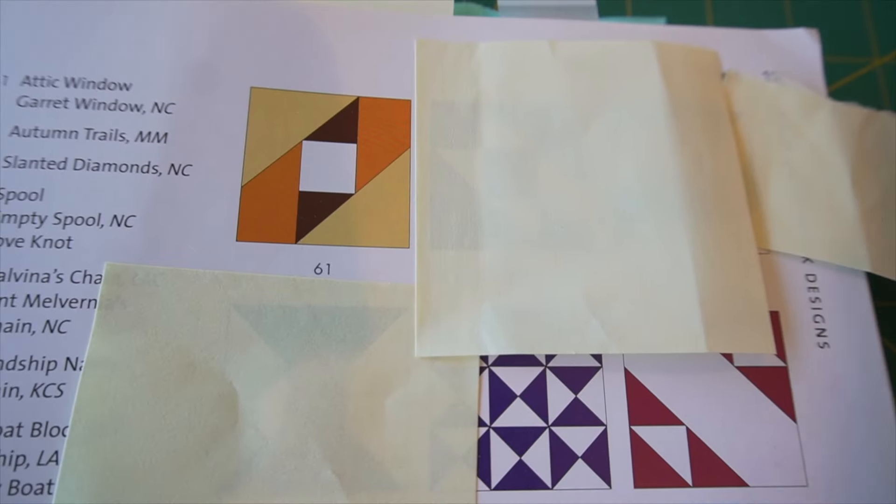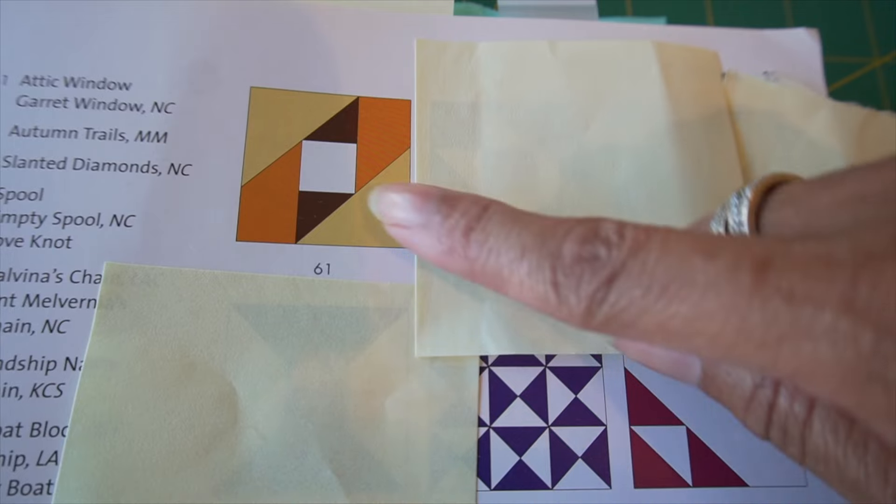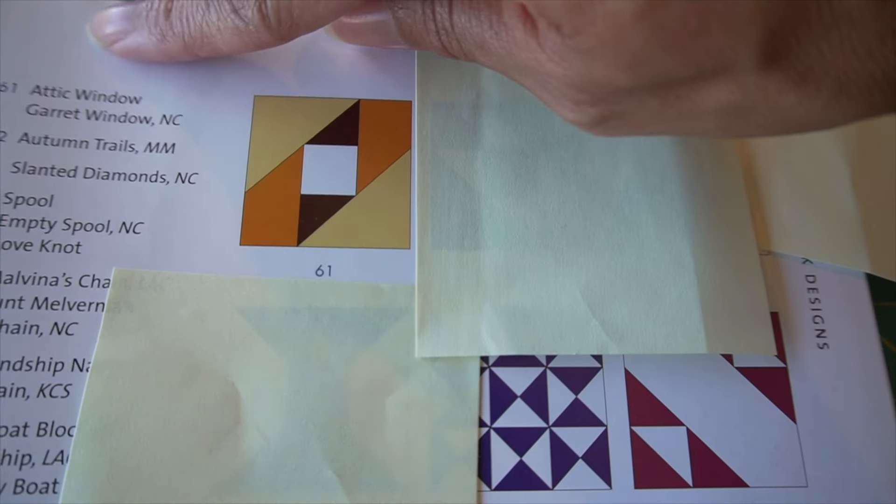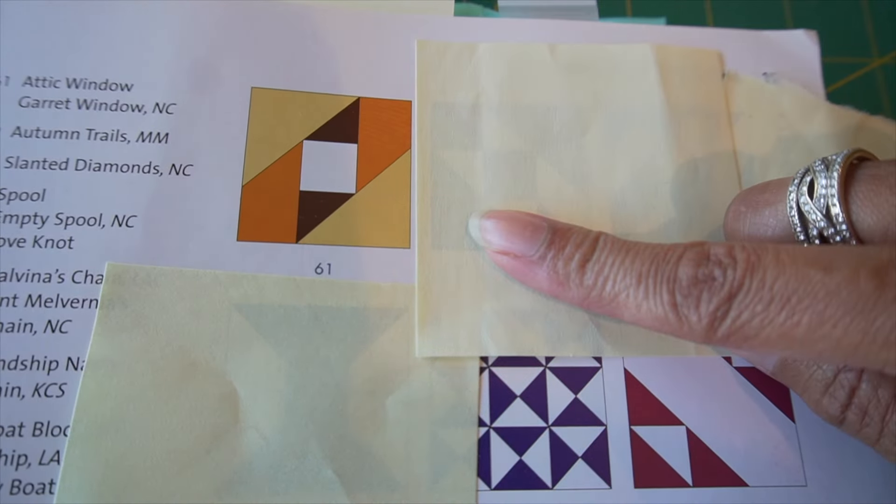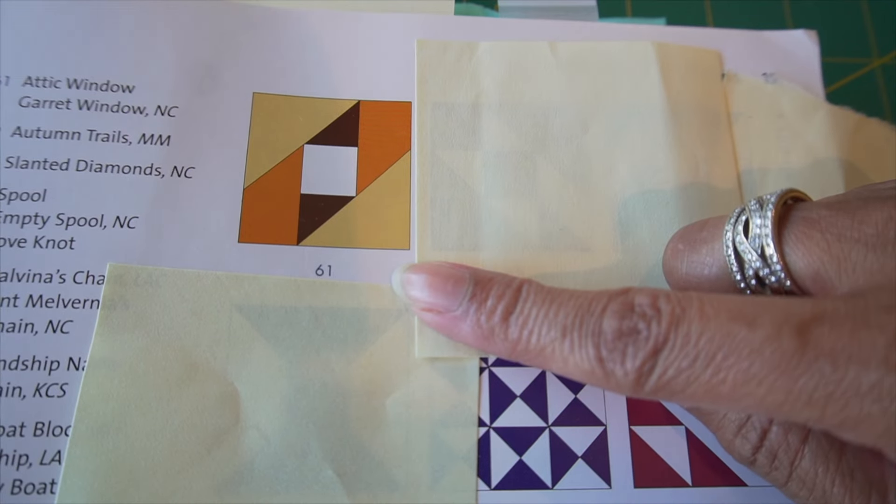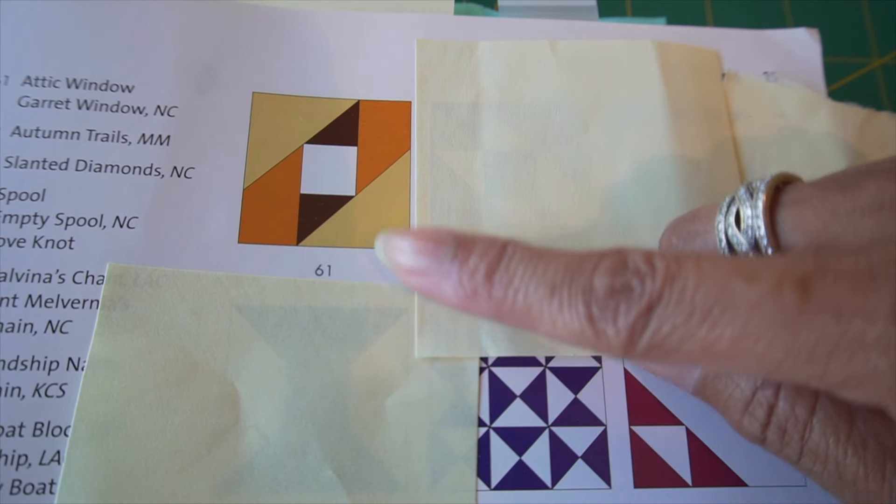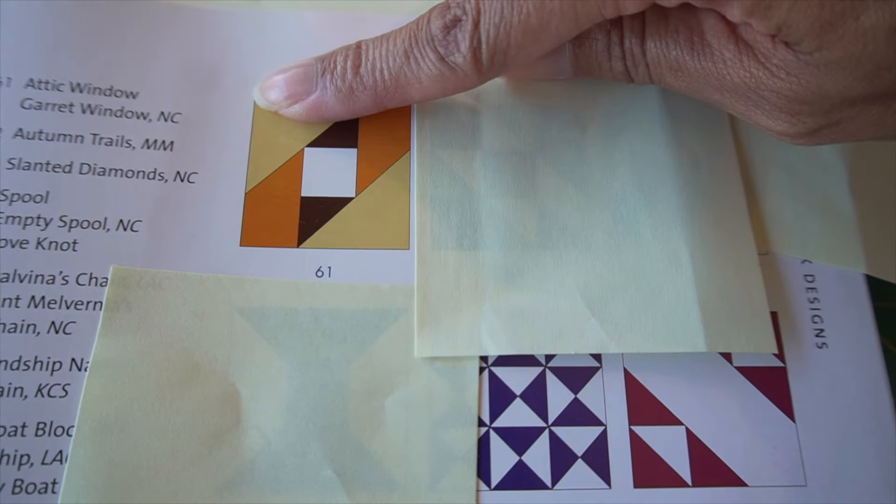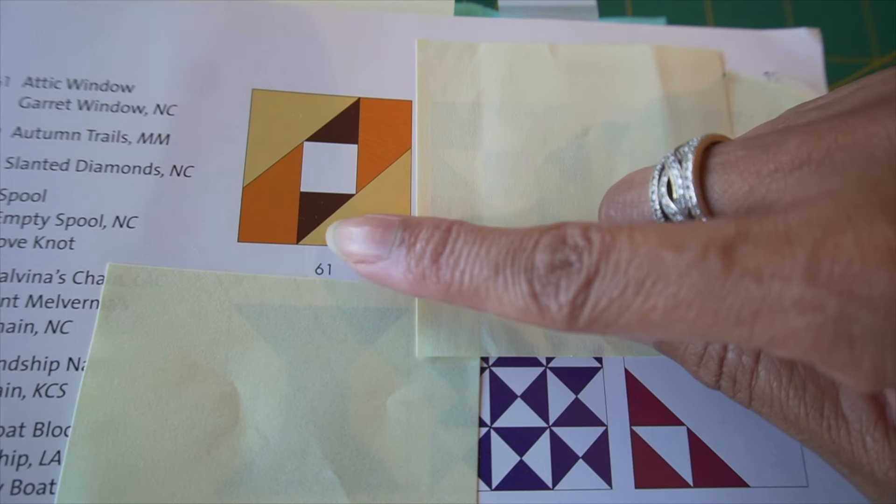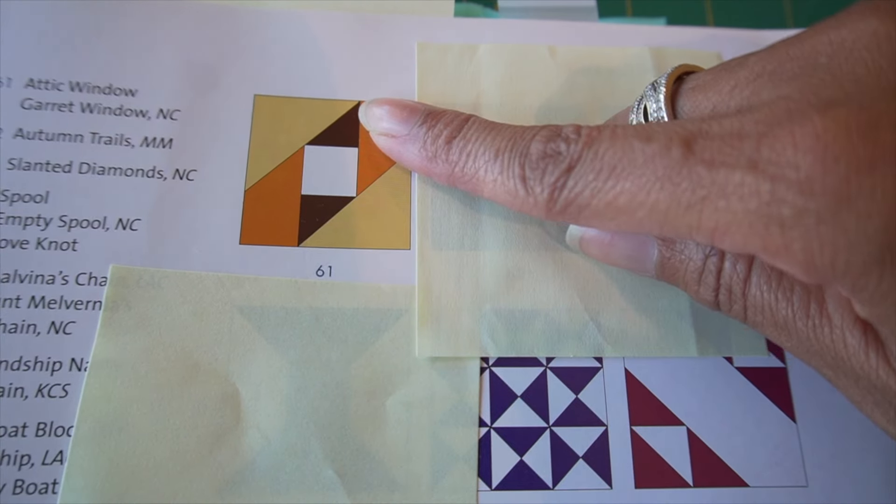So the block I'll be translating in this video is number 61 and it is called the Attic Window Block. As you can see here, it looks like Maggie Malone used two larger half-square triangles, this shape here, two smaller half-square triangles, and a square.